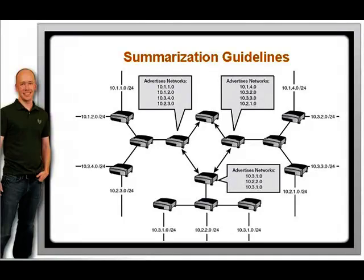The second rule is to summarize into the core of your network. The core is where the bigger, faster, busier routers are, like the central office router in the previous example. These routers have the job of dealing with high volumes of traffic headed for all different areas of the network, so we do not want to burden them with big, highly detailed route tables. The further you get from the core, the more detail the routers need to get traffic to the correct destination network.